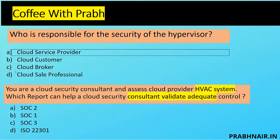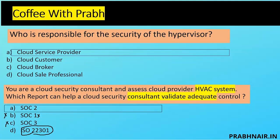We have four options: SOC2, SOC1, SOC3, and ISO 22301. SOC1 is definitely not the answer — it covers ICOFR, internal control over financial reporting, related to financial viability. SOC3 is a very generic report published externally; it doesn't cover any control detail, only providing an opinion on SOC compliance. ISO 22301 covers BCMS, Business Continuity Management System, but the question was specifically about controls. So the answer is SOC2, because SOC2 consists of five trust principles, one of which is availability. The answer is SOC2.